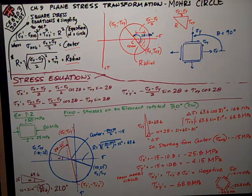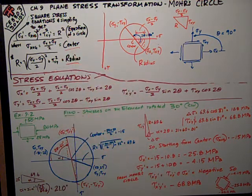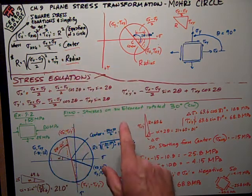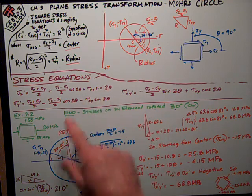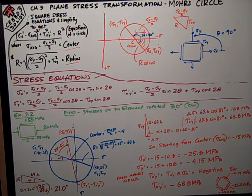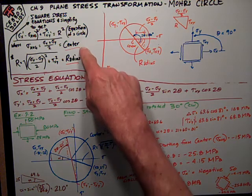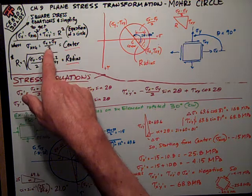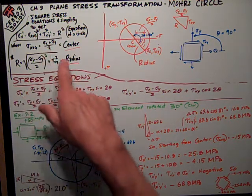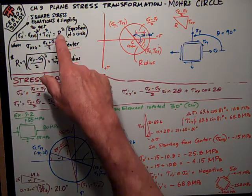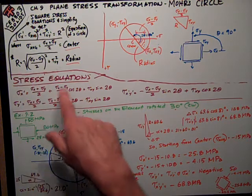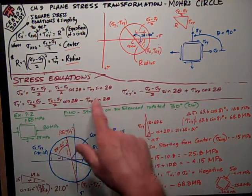There's this German guy from long ago named Mohr, M-O-H-R, and he observed that you can plot these things on a diagram using a circle, and it makes these relationships more visual and easier to deal with. This is the equation of a circle. Sigma average, which is sigma x plus sigma y over two, is the center of the circle. R is the radius of the circle, which works out to be this.